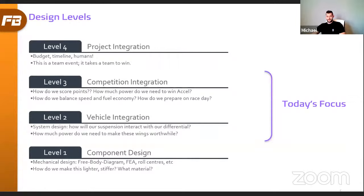Level two is vehicle integration. This is where the disparate components of the vehicle are connected to each other in some coordinated design that creates a Formula Student vehicle. We get into system design: how will our suspension interact with our differential? How does the powertrain work with our aerodynamics? How much power do we need to make the wings worthwhile? This connects all level-one components into a fully functioning vehicle made for some purpose.